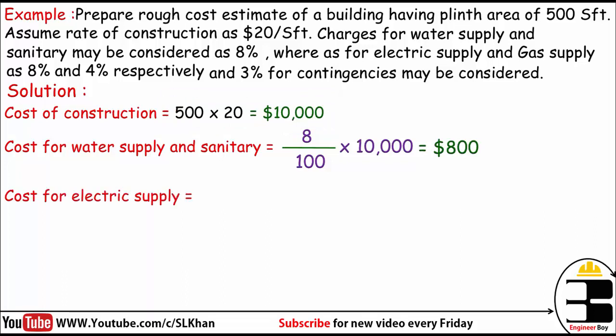We can now calculate the cost of electric supply, which is also 8% — the same rate as water supply and sanitary. So the cost of electric supply is also $800.